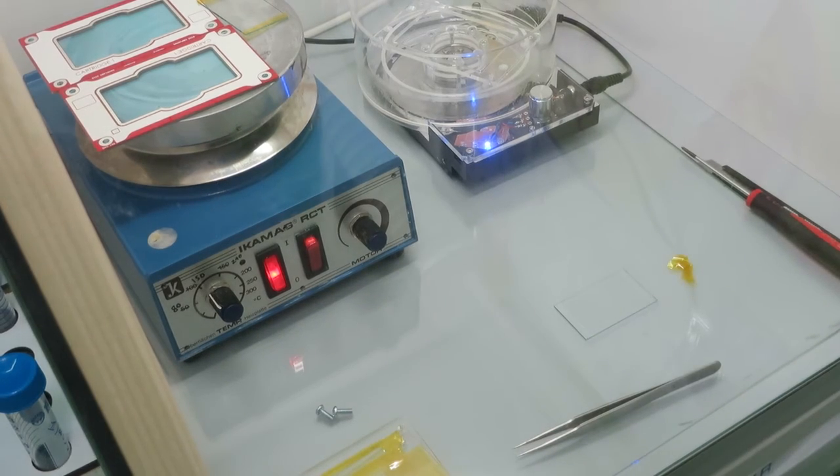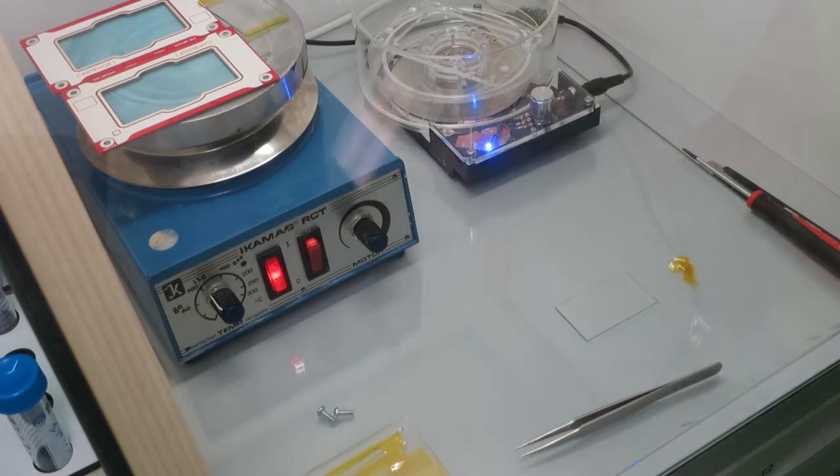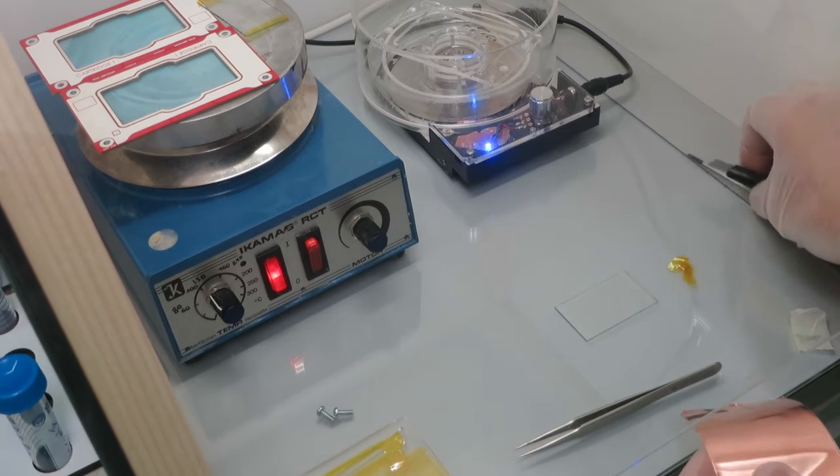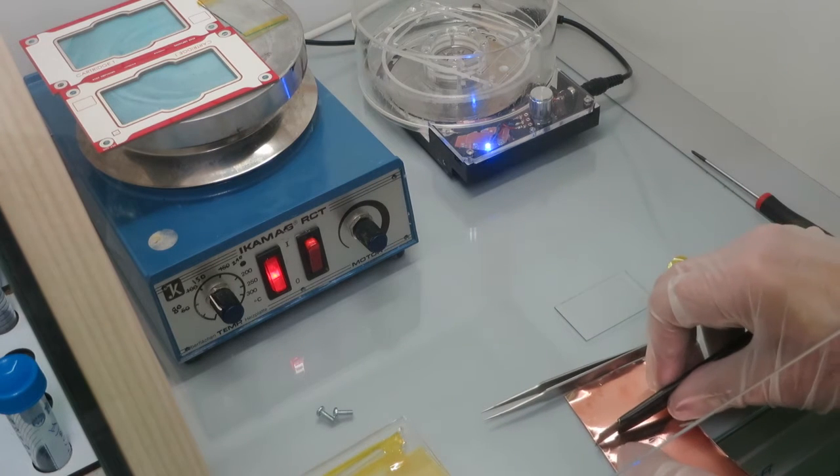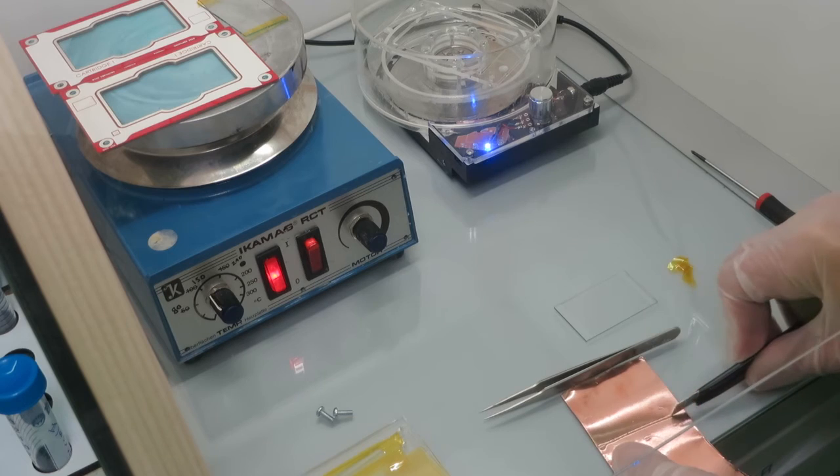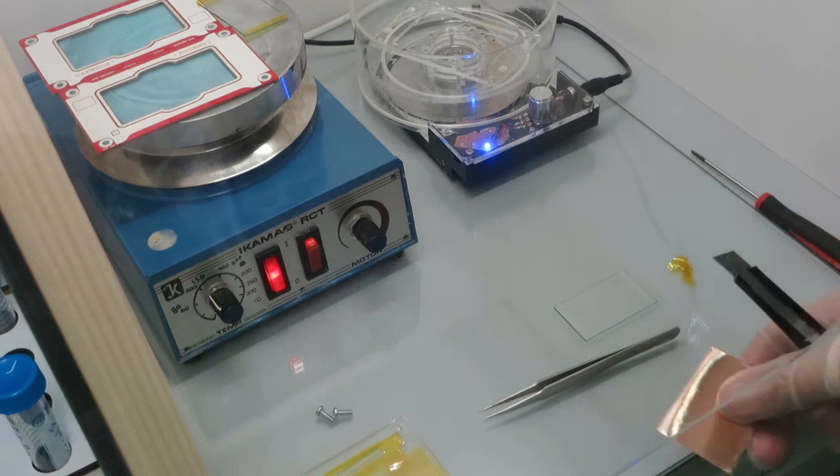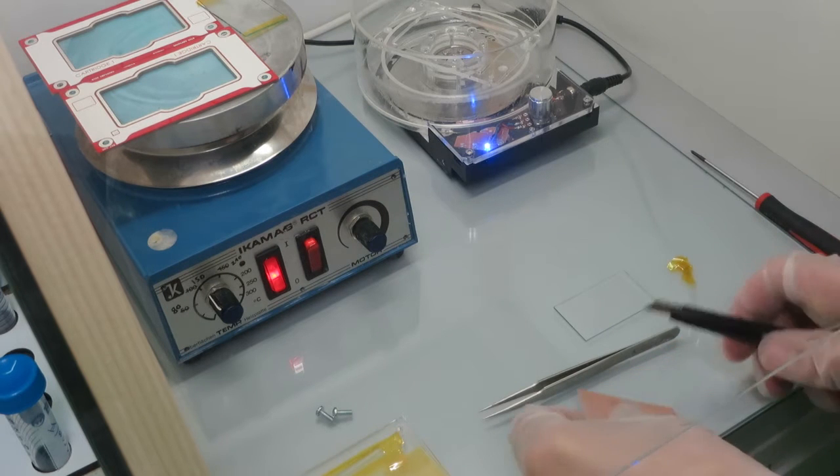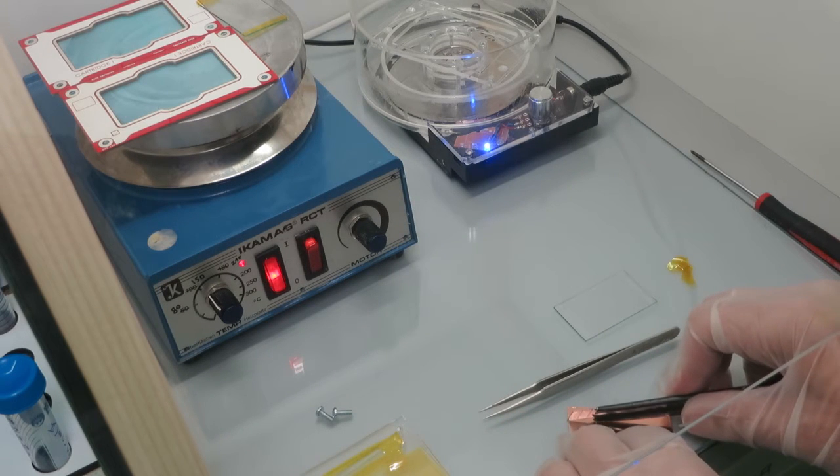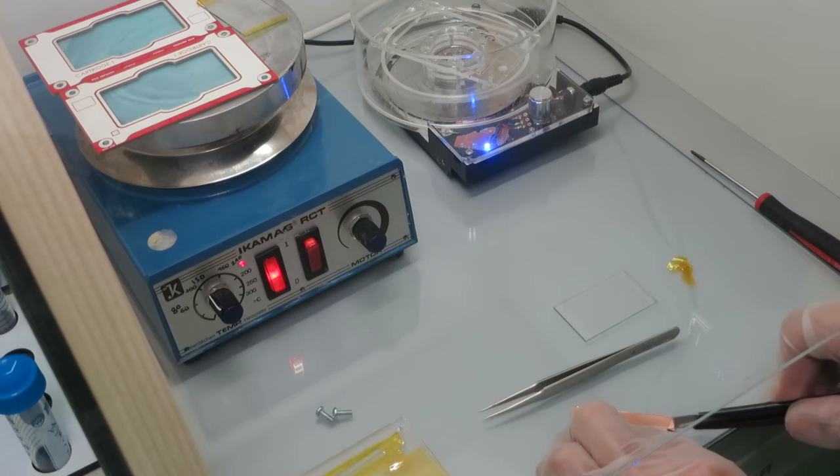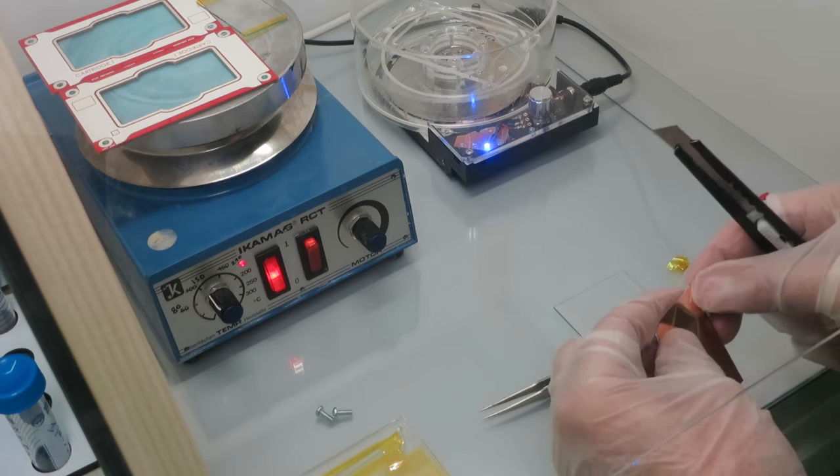This exposes the conductive part of the glass again. Then I use this copper tape, which is a special copper tape that is conductive on both sides. It has a glue that is conductive on the back. You can get this for quite cheap at Sparkfun and other stores that have the same material.